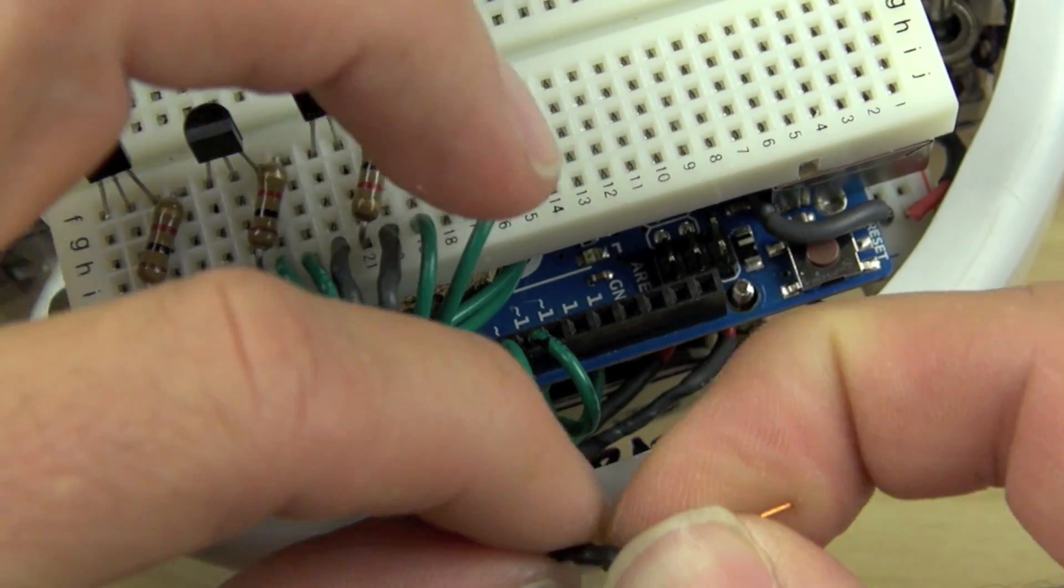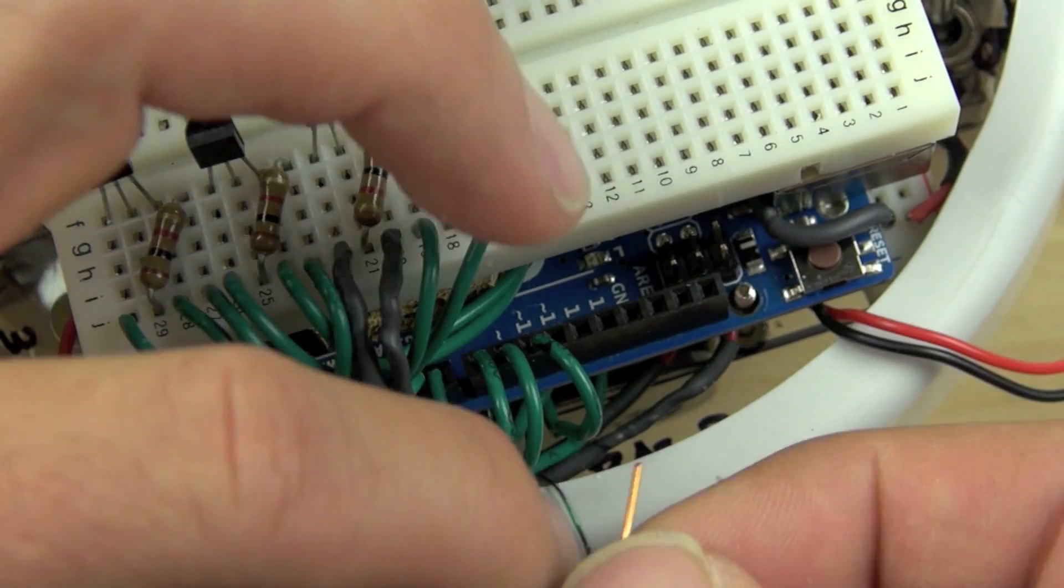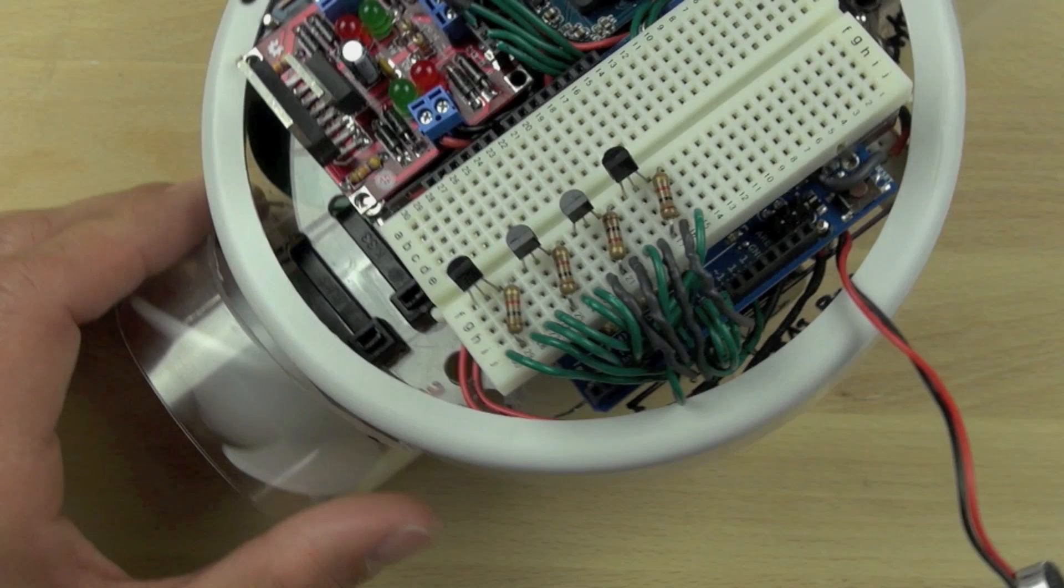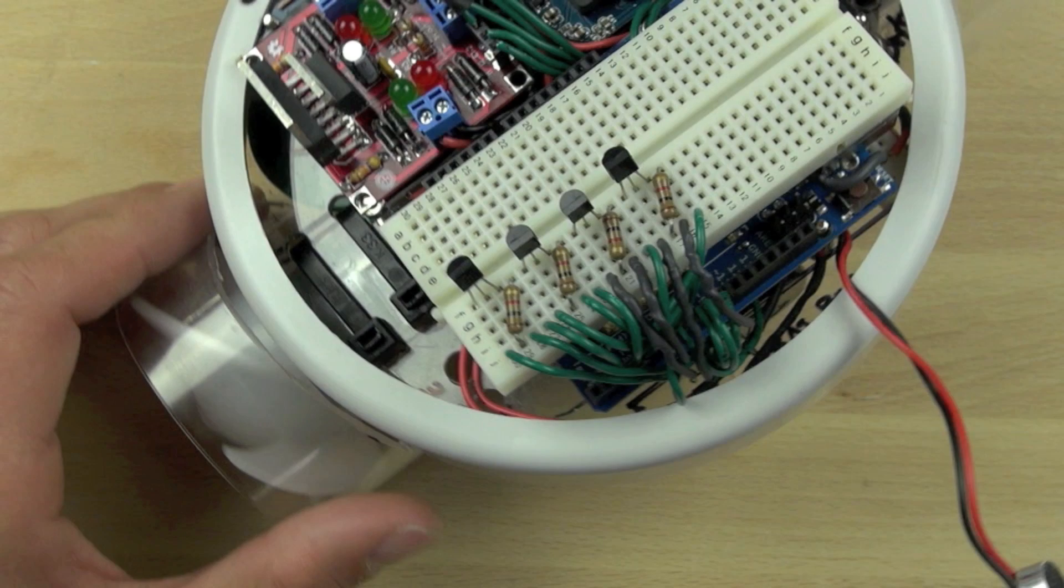We'll just put those wires on both the emitter and the collector on the transistor. Now we can control our camera with our Arduino.